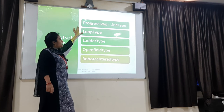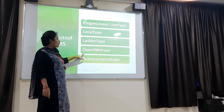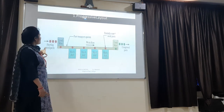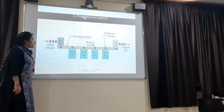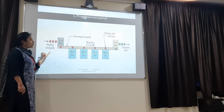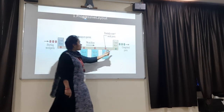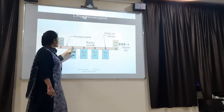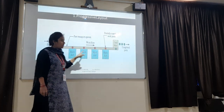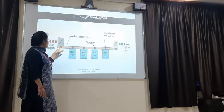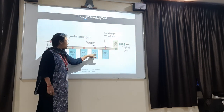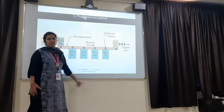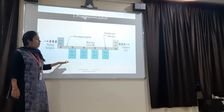The different layouts of FMS are: progressive layout (also called inline layout), loop layout, ladder layout, open field layout, and robot center layout — five layouts in total. In the progressive layout, the work part is loaded at the starting point and unloaded at the other end. In between, the workflow — shown by red dots — passes through different machine stations. The work part moves to the first station and then to the next; reverse flow of the work is not possible — only one direction workflow is used.